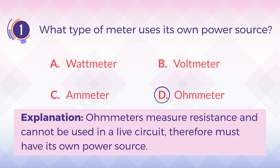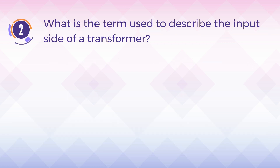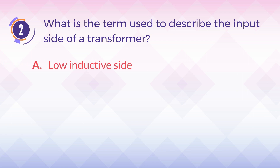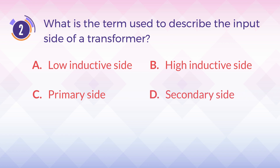Explanation: ohmmeters measure resistance and cannot be used in a live circuit, therefore must have its own power source. Number two: what is the term used to describe the input side of a transformer? A) low inductive side, B) high inductive side, C) primary side, D) secondary side.